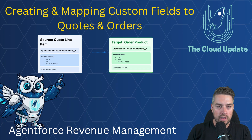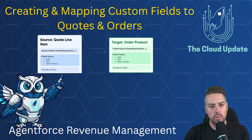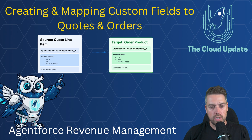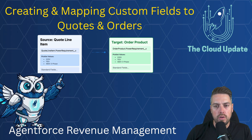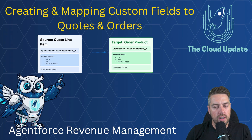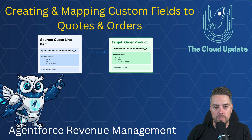Hello everyone, this is JM with the Cloud Update. Today we're going to take a look at the steps you need to go through when you create new fields on quotes and orders, or quote line items and order products, and how you can create those under your context definition and get the value maps correctly from quotes into orders.